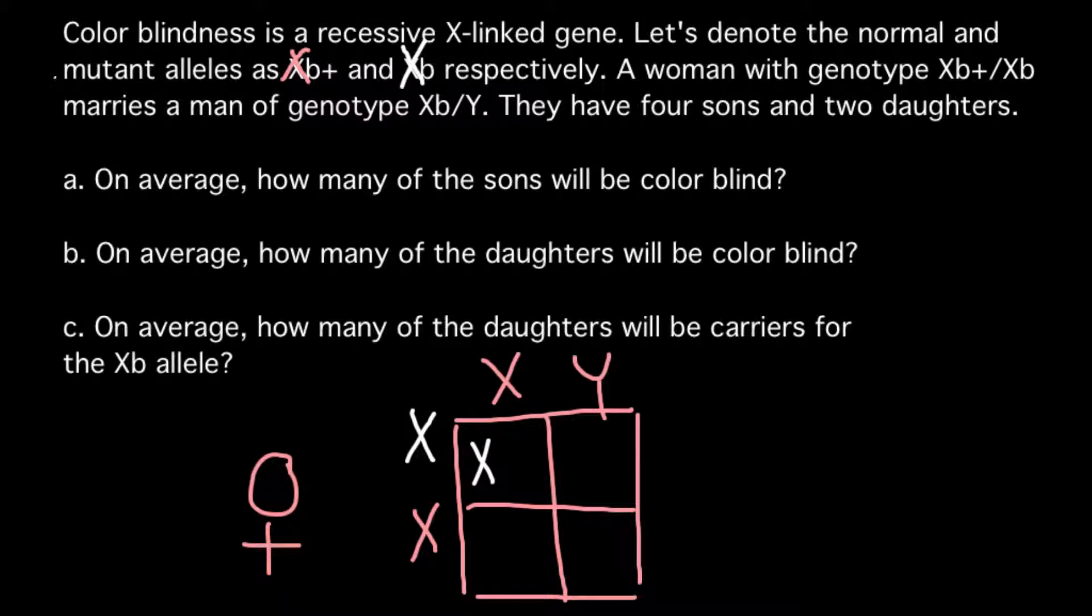But to make it easy to understand this problem I just would use different color for the whole chromosome. So here we also have one defective X chromosome from the mother side and one normal Y chromosome from the father side.